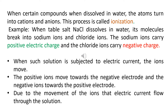Compound formation happens between a positive ion and a negative ion. After one atom loses an electron and another atom gains it, they form a bond resulting in a new compound. When certain compounds dissolve in water, the atoms turn into cations and anions. The process of converting an atom into ions is called ionization.